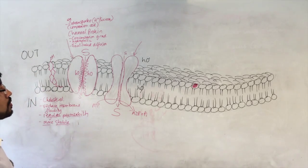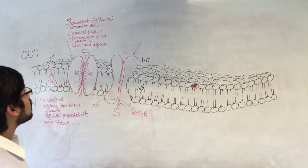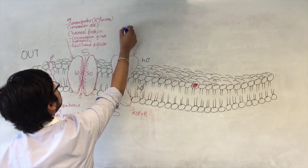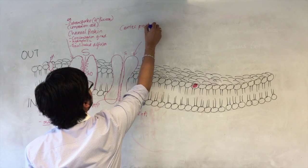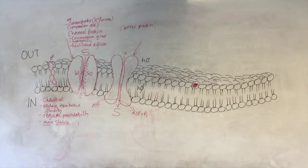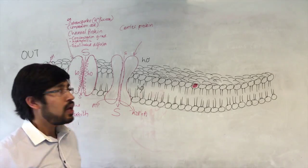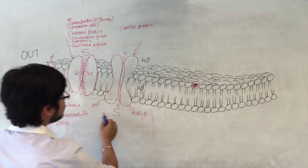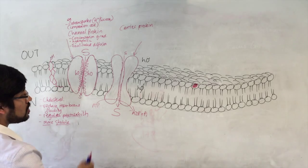The other kind of transport protein is the carrier protein. Now what these do, as shown here in the diagram, ATP is broken down to ADP and phosphate to release energy.